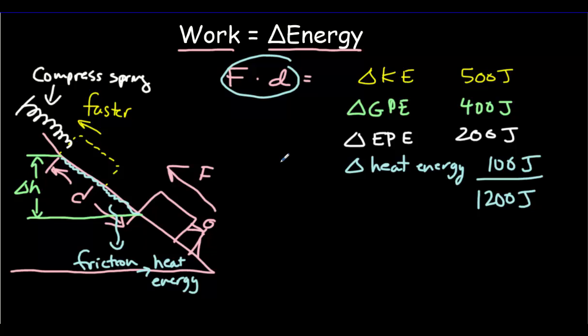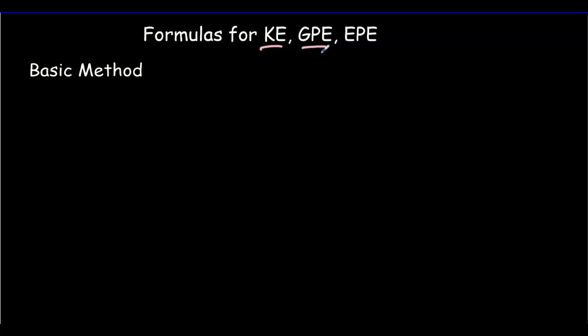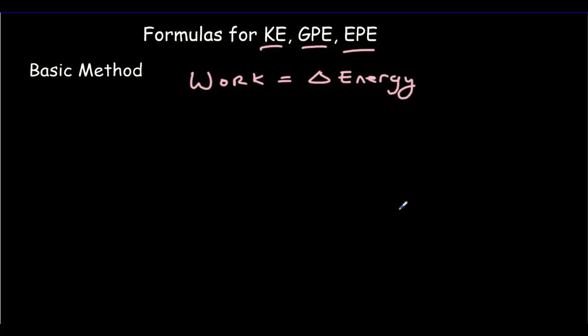What we're going to try to do now is work out formulas for kinetic energy, gravitational potential energy, and elastic potential energy. The basic method starts with the idea that work is equal to change in energy, but we're going to do our work in such a way that only one type of energy transformation occurs at a time.